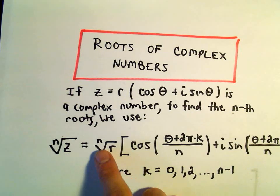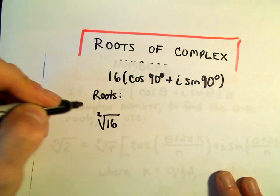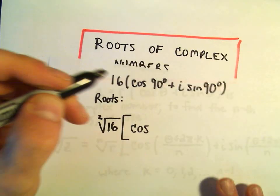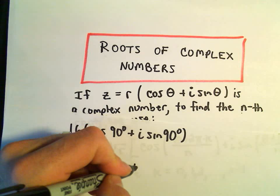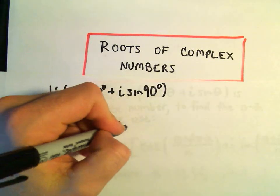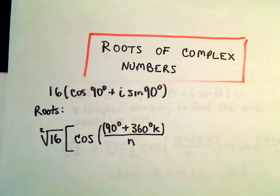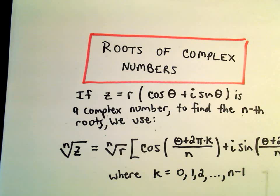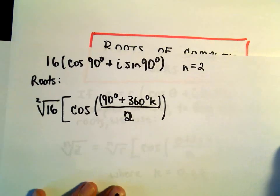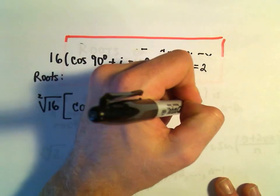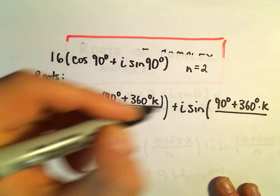So it says to find the second roots, we'll take the square root of our number. So it says we simply take the square root of the number, so again the second root. And then we take cosine, it says take whatever your original angle was, which is 90 degrees. We'll add to that 2 pi k, but instead of 2 pi, I'm going to use, well, equivalently 360 degrees times k. This is all over n. Okay, we can even again fill in our n value though, because since we're taking a second root, in this case n equals 2. So let's go ahead and put a 2 in the denominator. And then we would have the same thing. We would have plus i sine of 90 degrees plus 360 degrees times k all over 2.